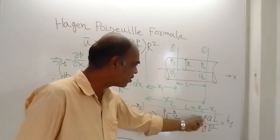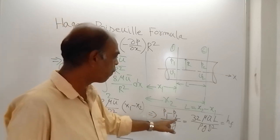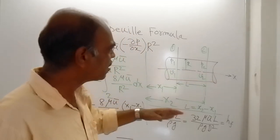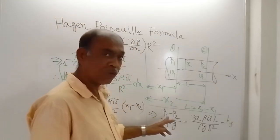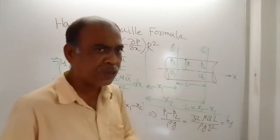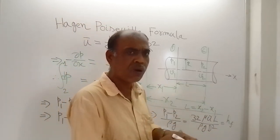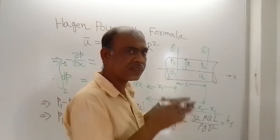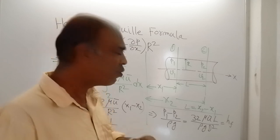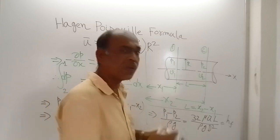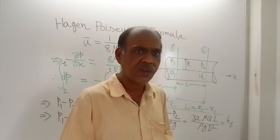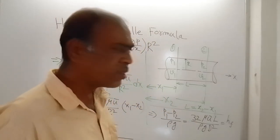The right-hand side is a positive quantity, which means P1 is greater than P2. So in the direction of flow, even though the diameter remains the same (circular pipe), there is a loss of pressure — P2 is less than P1. Pressure decreases in the direction of flow. Dividing the differential pressure by ρG converts it to pressure head, as you have learned in earlier classes.